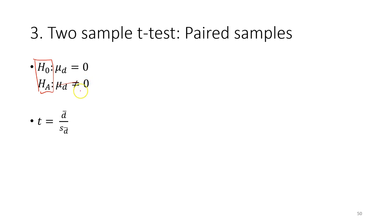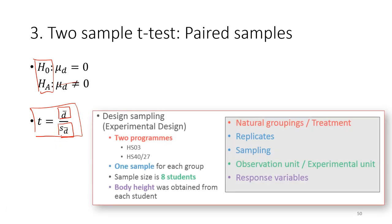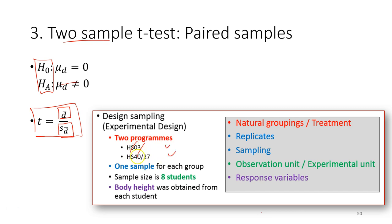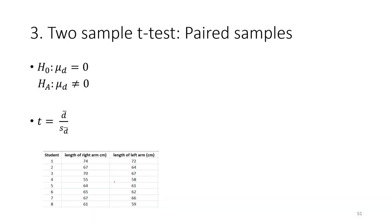The alternative hypothesis is that the difference between the two populations is not zero. We will discuss the formula in the next few slides. Regardless of which analysis you use, it depends on your research question. For each research question when you design your experiment or sampling, you still have two populations, you obtain samples from each population, and each sample consists of a number of observation units with measurements taken.